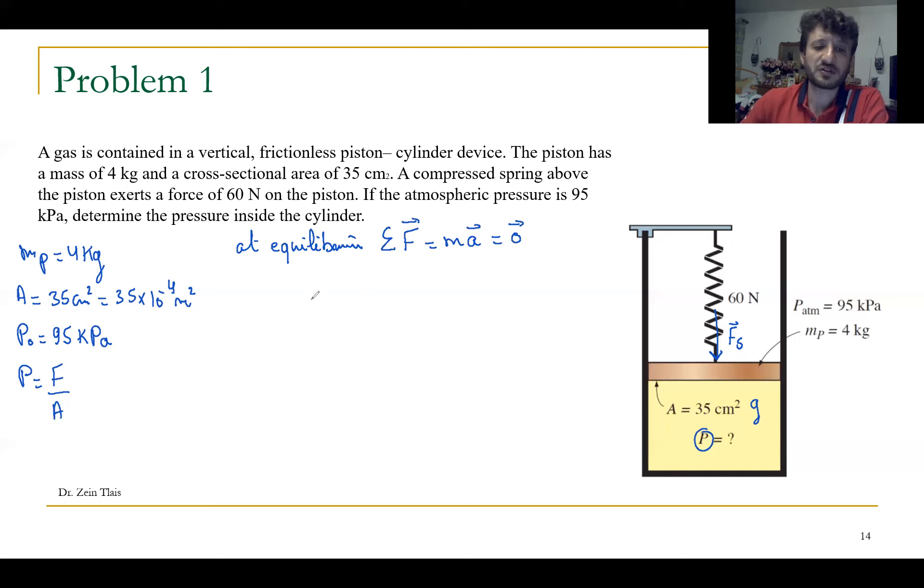What is the summation of F applied on the piston? First of all, we have the piston here. We have the weight. We can say weight of the piston. Weight of the piston equals to M times G. We can approximate G equals to 9.8 or 10.